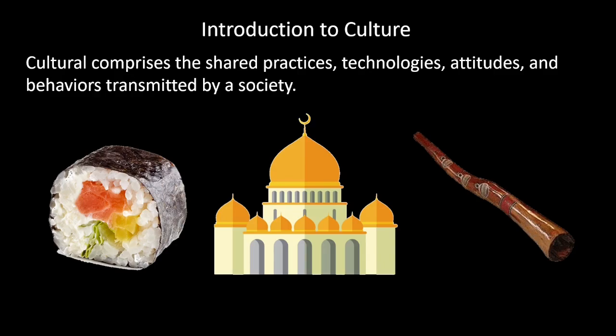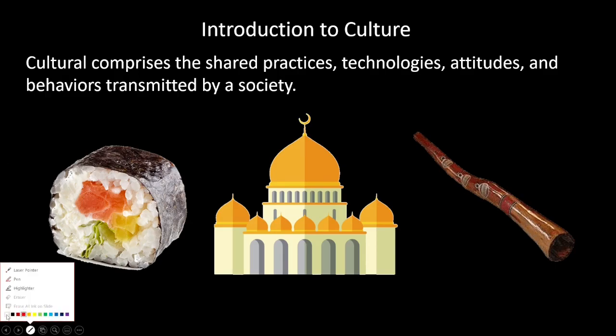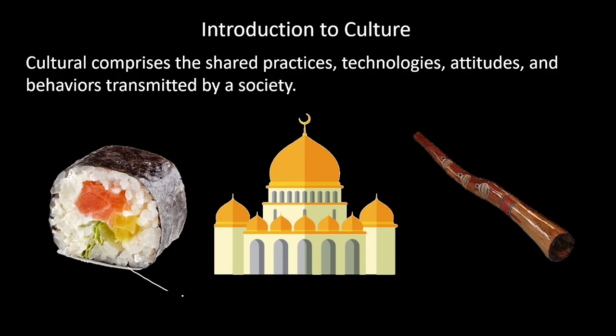This is a didgeridoo, which is part of Australian culture; sushi, which is part of Japanese culture; and a mosque, which is part of Islamic culture. And all three of these are actually part of the same category, which is known as material culture.